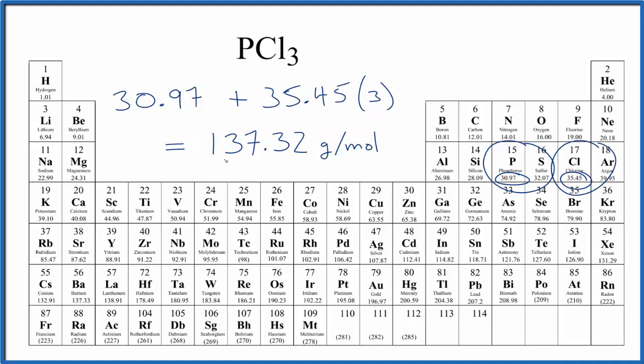What this means is if we have 137.32 grams, that'll be one mole of PCl3. If we have one mole of PCl3, the mass will be 137.32 grams.